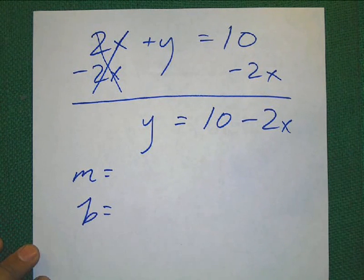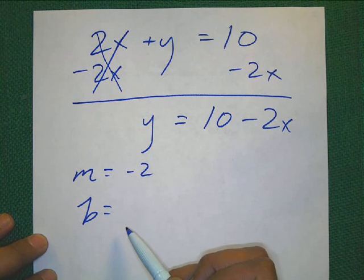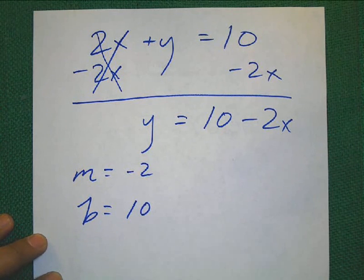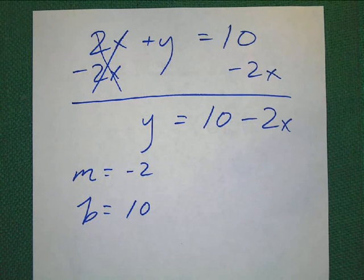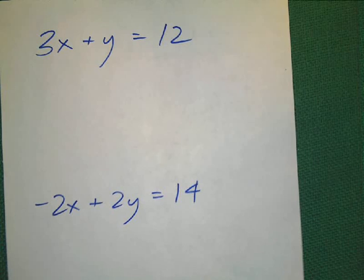What I want you to do right now is write down the slope. Write down the y-intercept. Go ahead and pause the video. Now, if you said the slope was negative 2, you are correct. If you said the y-intercept was 10, you are also correct.